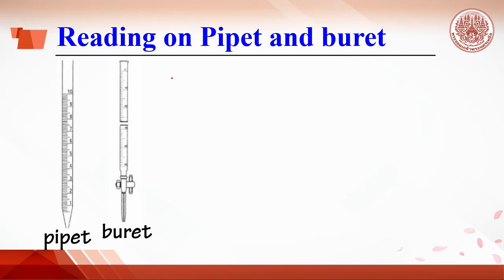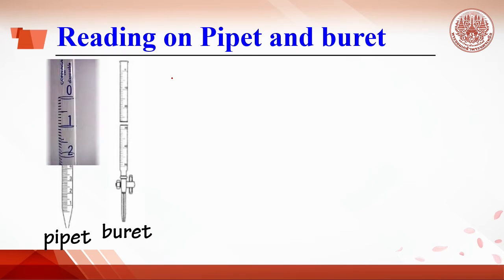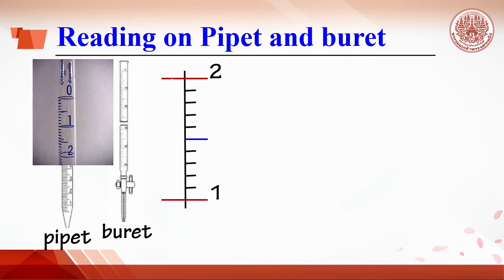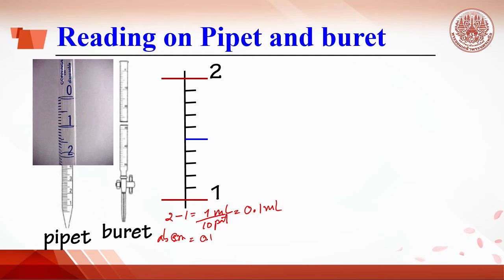Looking at the pipette and burette, they show a similar scale where 1 mL is divided into 10 parts. The smallest scale is 1 minus 0 equals 1 mL divided by 10 parts, which equals 0.1 mL. The absolute error is 0.1 divided by 2, which equals 0.05 mL, meaning the reading contains two decimal places. So the burette and pipette are more accurate than the cylinder.